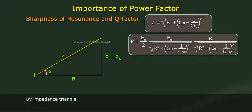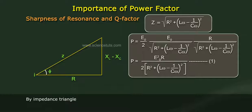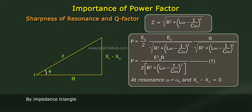Simplifying, P equals E₀²R divided by 2 times [R² + (Lω − 1/Cω)²]. This is Equation 1.